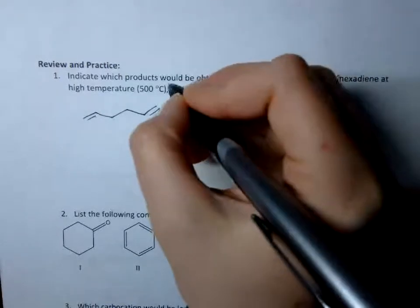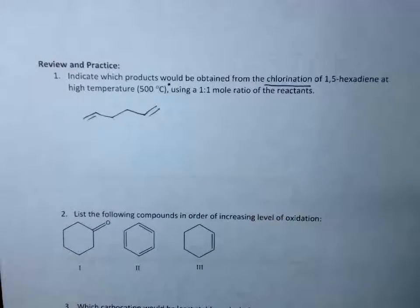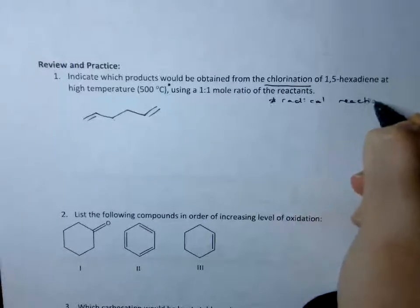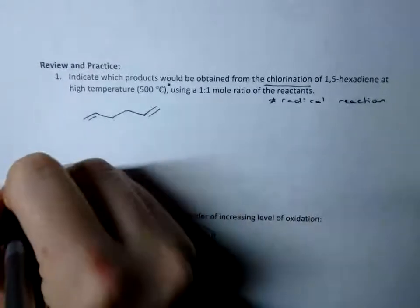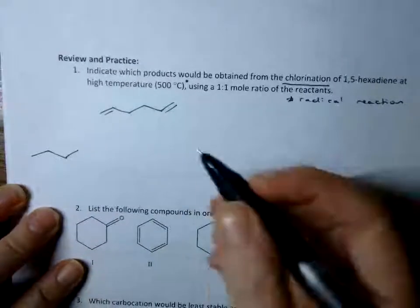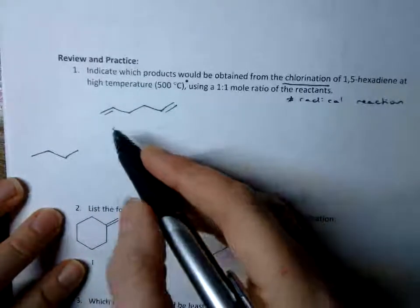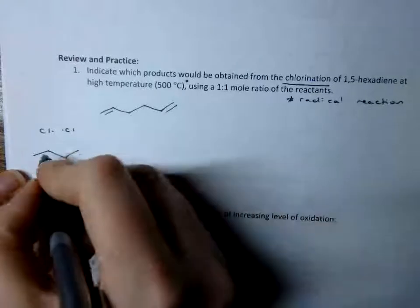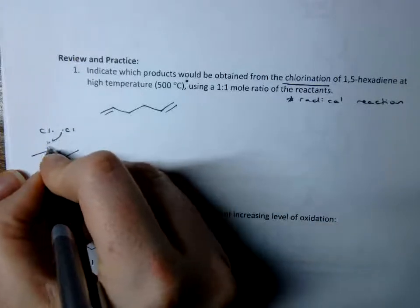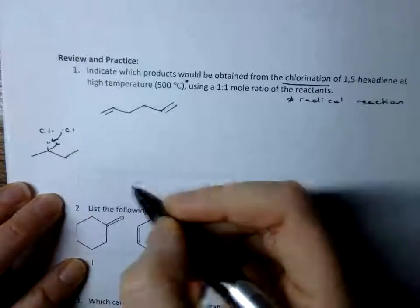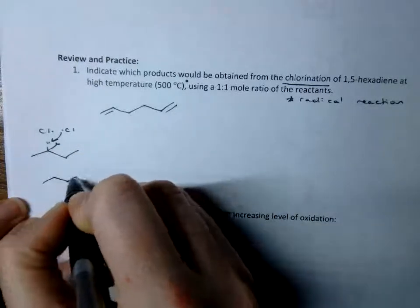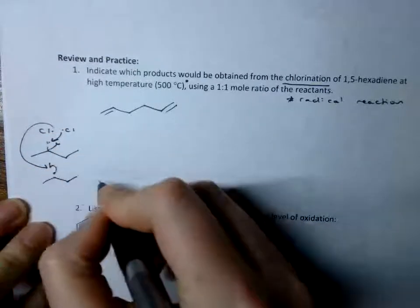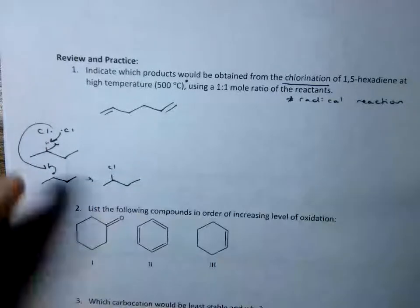Whenever I see high temperature and chlorine, I know that's going to be a radical reaction. Usually we see those happening with regular old plain alkanes or alkynes, but it will also happen on double bonds wherever the most stable radical would form. Normally we have the initiation step where the chlorine breaks up, and then the propagation step where the radical will take a hydrogen that leaves behind the most stable radical. Then that will combine with the other radical to make a chlorine on what used to be a plain old alkane.